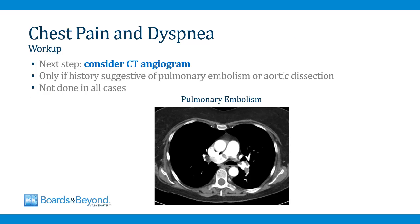The next step is to consider a CT angiogram. A CT angiogram can make the diagnosis of pulmonary embolism and aortic dissection, but it's not necessary in all cases. It's only done if the history is suggestive of PE or aortic dissection. Patients who have lots of risk factors for one of these conditions, or an exam or history consistent with these conditions, get a CT angiogram — other patients do not.